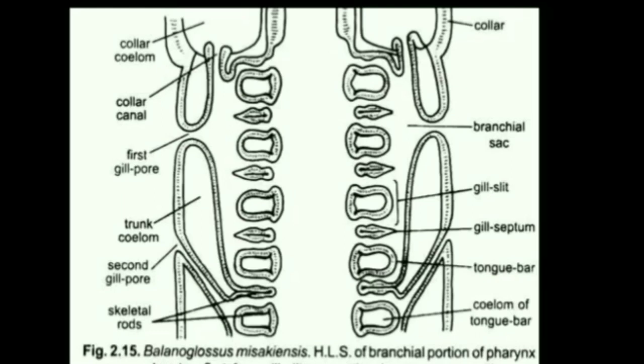The respiratory system consists of two parts: first, gill slits, and second, gill sacs or branchial sacs. As the name indicates, gill sacs or branchial sacs contain gill slits in them — these are also called branchial pouches. These gill sacs open to the outside through gill pores and communicate with the pharynx through gill slits. Branchial sacs are lined by flattened cells.